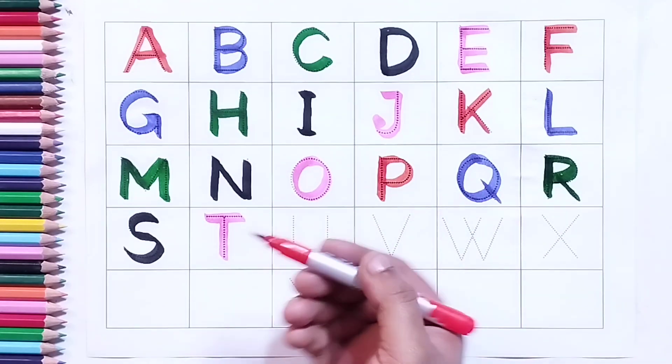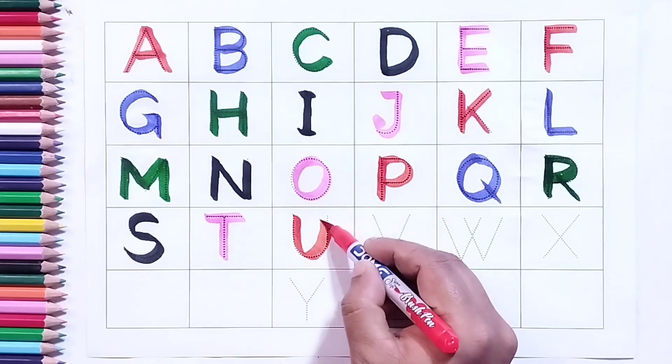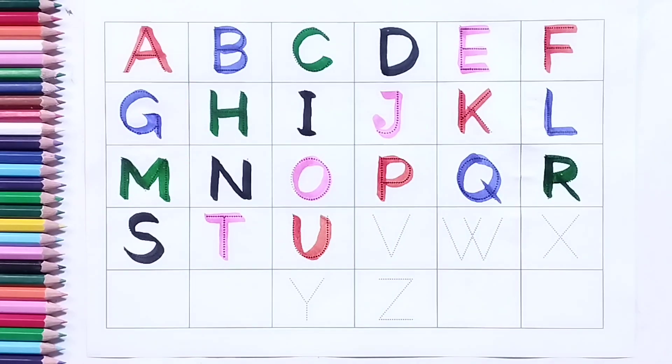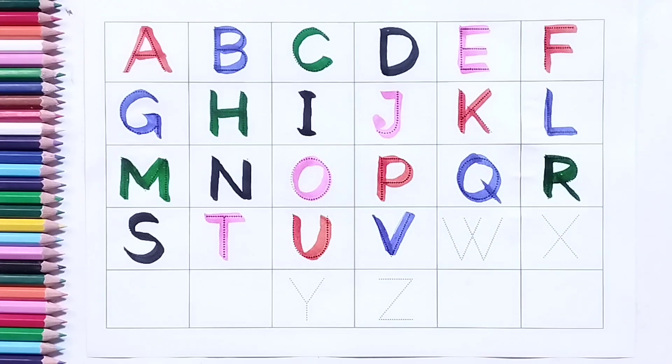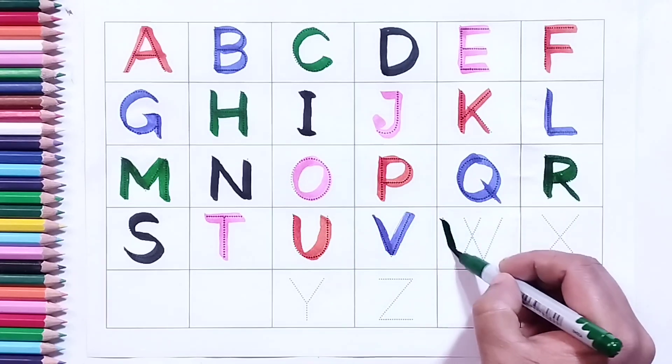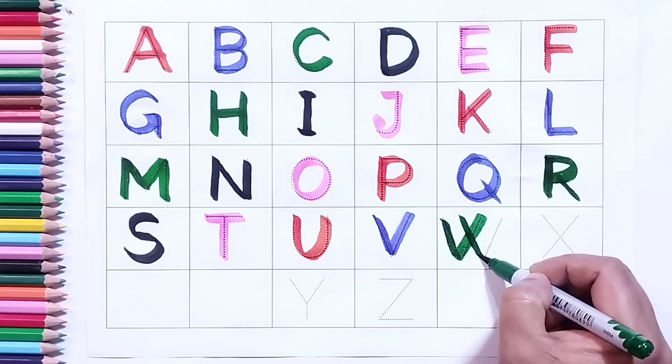Red color U, U for umbrella. Blue color V, V for van. Green color W, W for water.